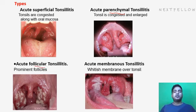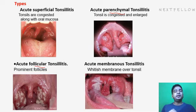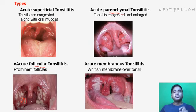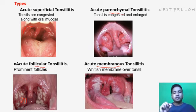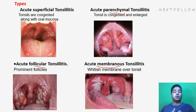The third type is acute follicular tonsillitis, where pus and bacterial invasion cause collection of degraded material within the follicles. As seen in the diagram, all follicles are filled with mucopus. The fourth type is acute membranous tonsillitis, where a dirty white or curdy white membrane is present over the tonsils. Membranous tonsillitis may occur in diphtheria, candidiasis, and infectious mononucleosis.